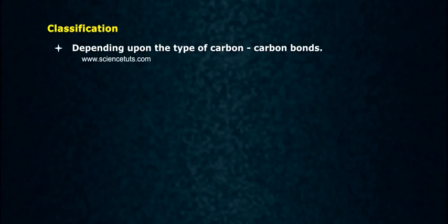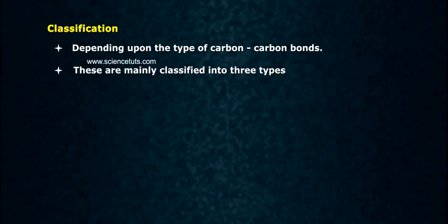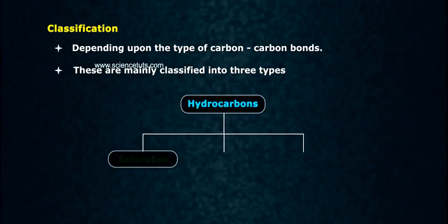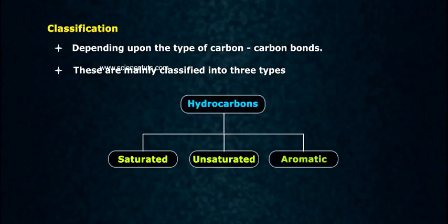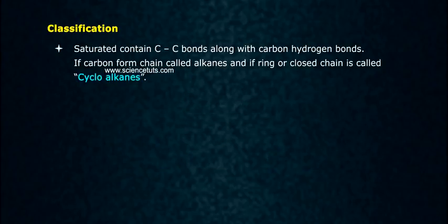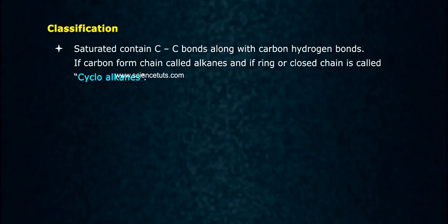Classification: depending upon the type of carbon-carbon bonds, hydrocarbons are mainly classified into three types — one: saturated, two: unsaturated, three: aromatic. Saturated hydrocarbons contain carbon-carbon single bonds along with carbon-hydrogen bonds. If carbon forms a chain, they are called alkanes, and if they form a ring or closed chain, they are called cycloalkanes.